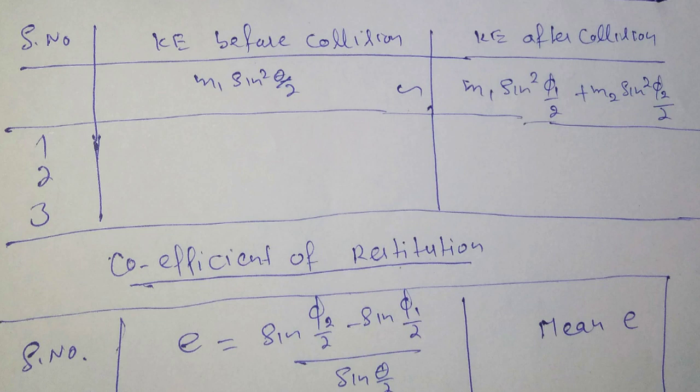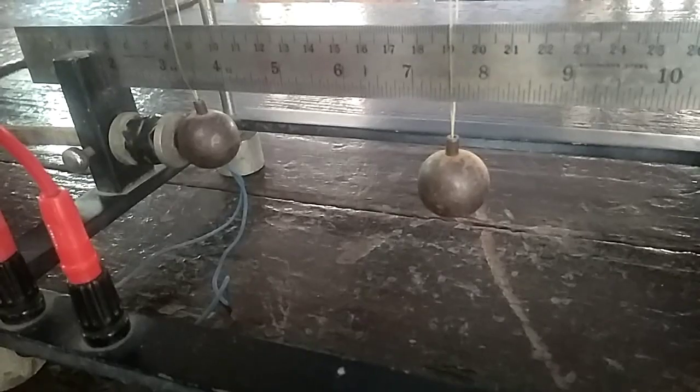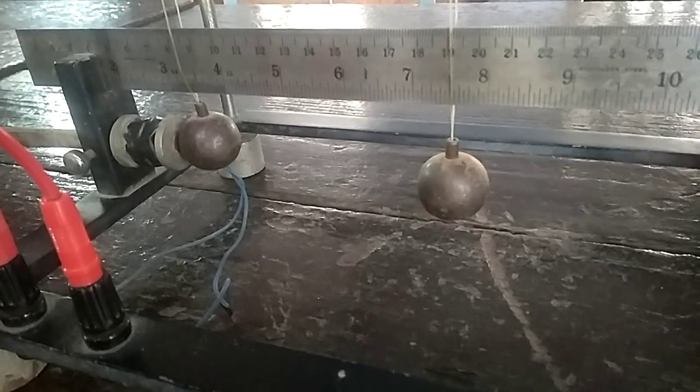If e equals 0, collision will be perfectly inelastic. Suppose if anyone gets a reading of 0.8, e equals 0.8, it means collision is nearly elastic.